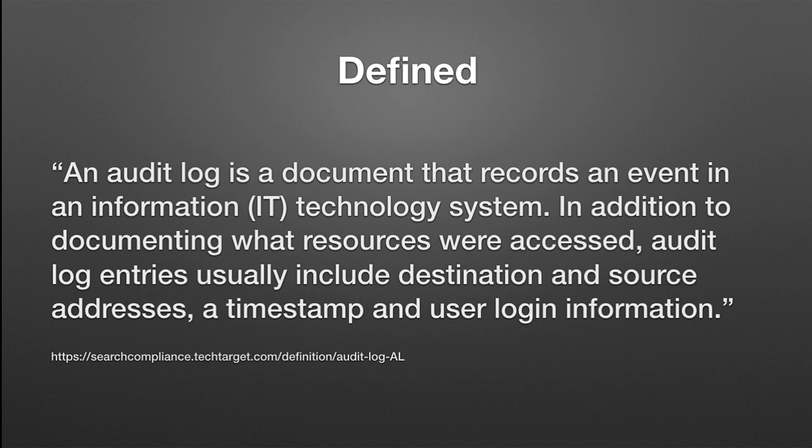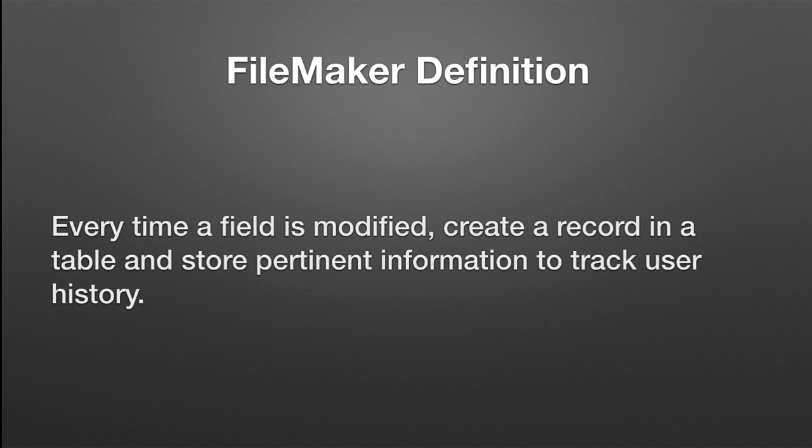So that doesn't totally apply to FileMaker — it's a little bit different what we're going to store. For FileMaker, every time a field is modified, we're going to create a record in a table and store pertinent information to track user history. Having data in a record is what makes a database powerful — you can sort it, find it, do all kinds of things. Records are the building blocks of a database.